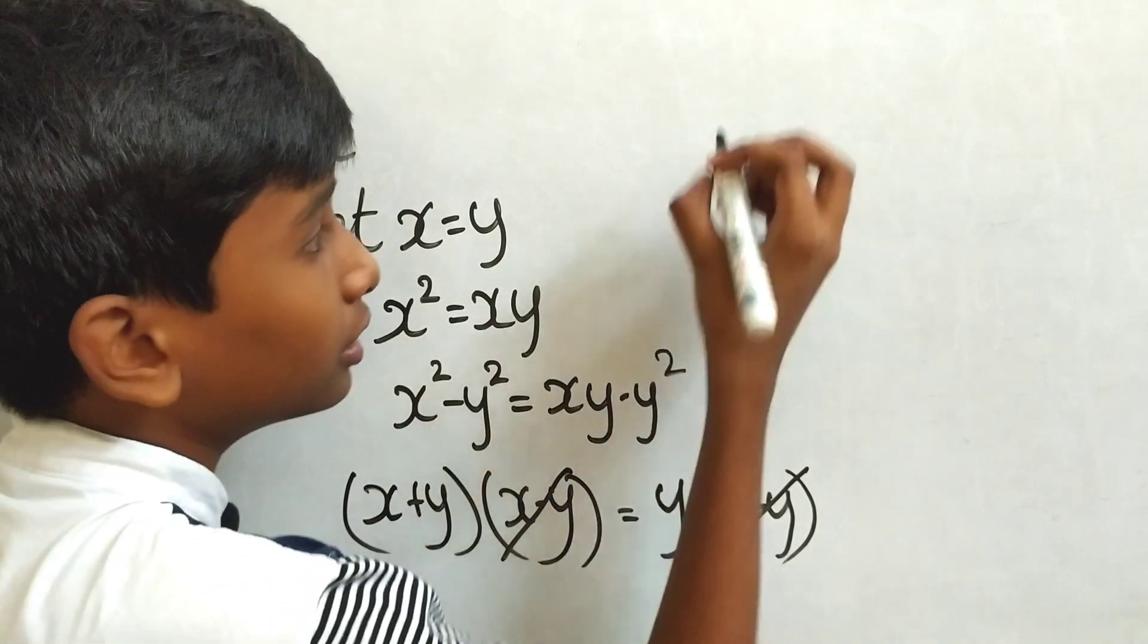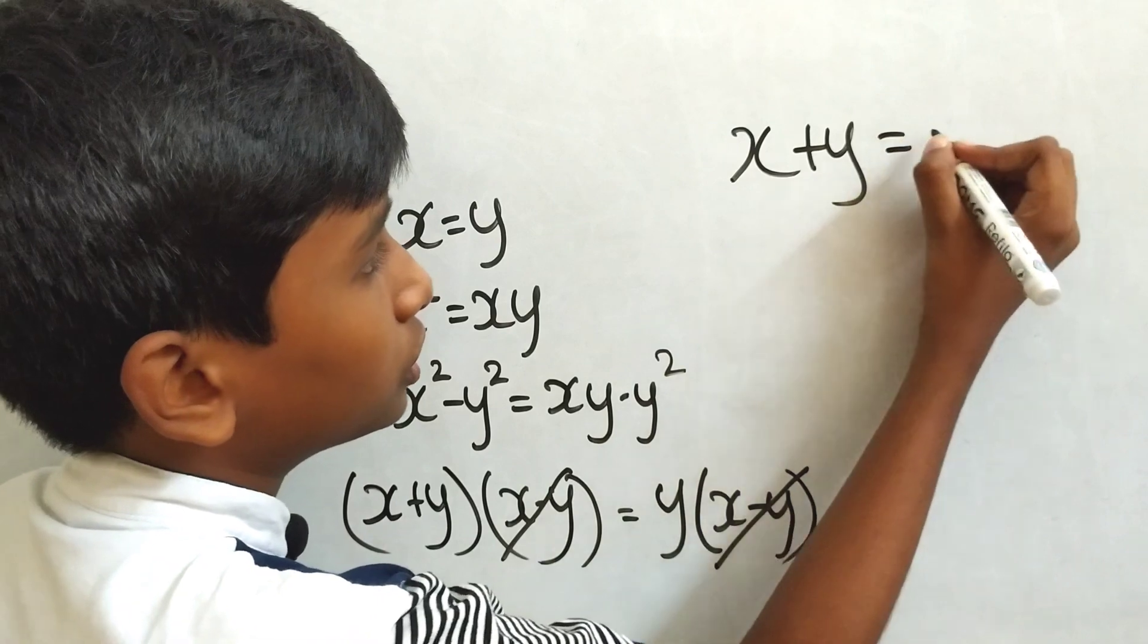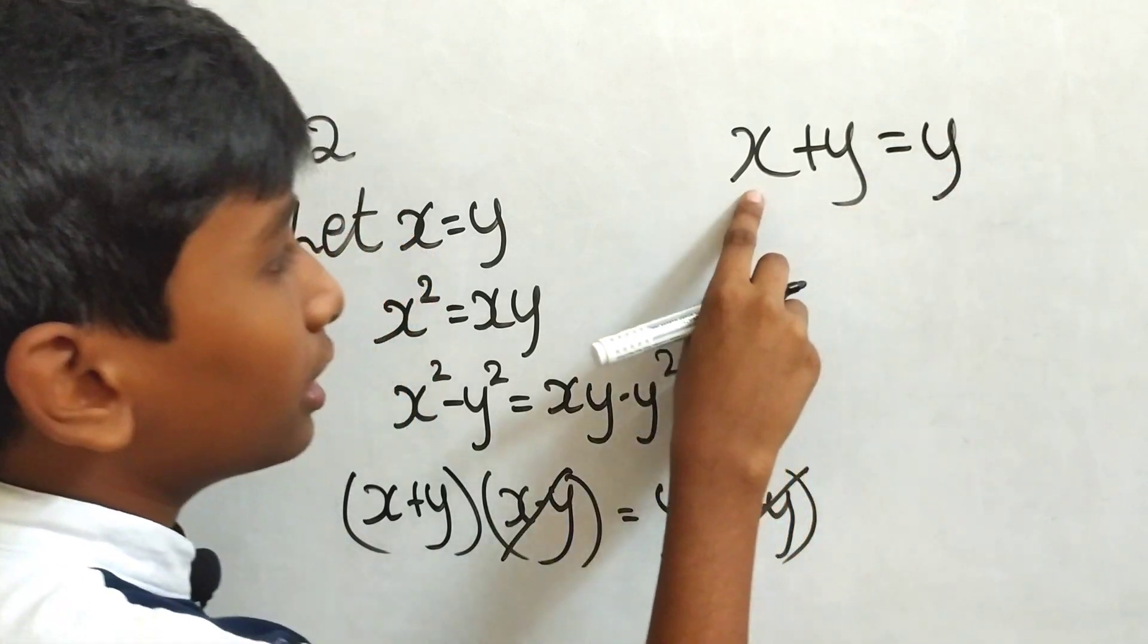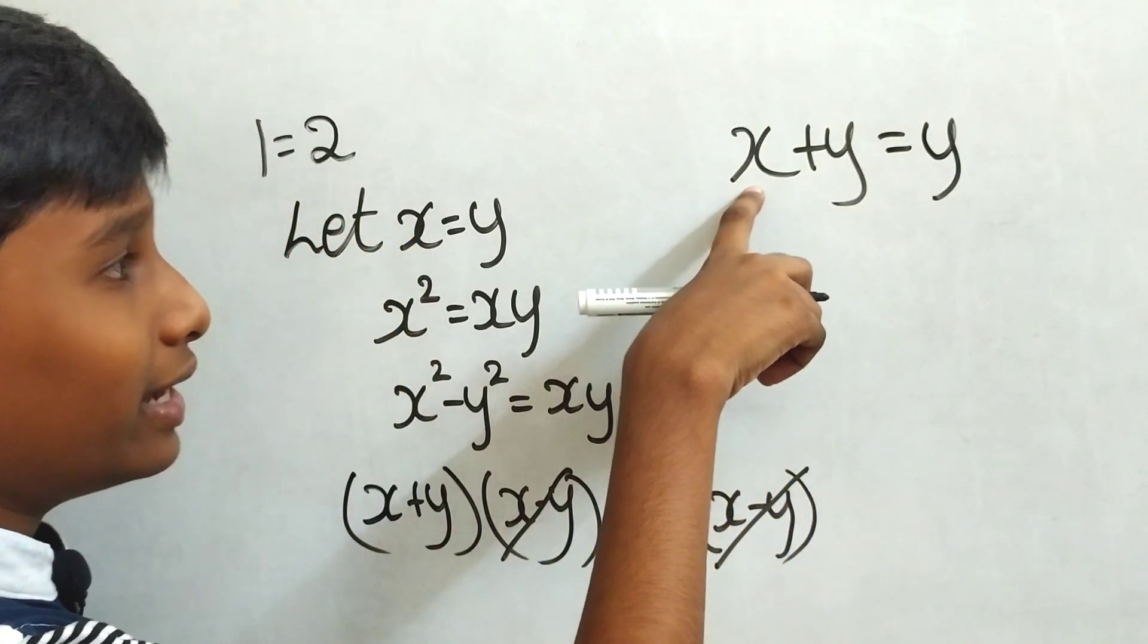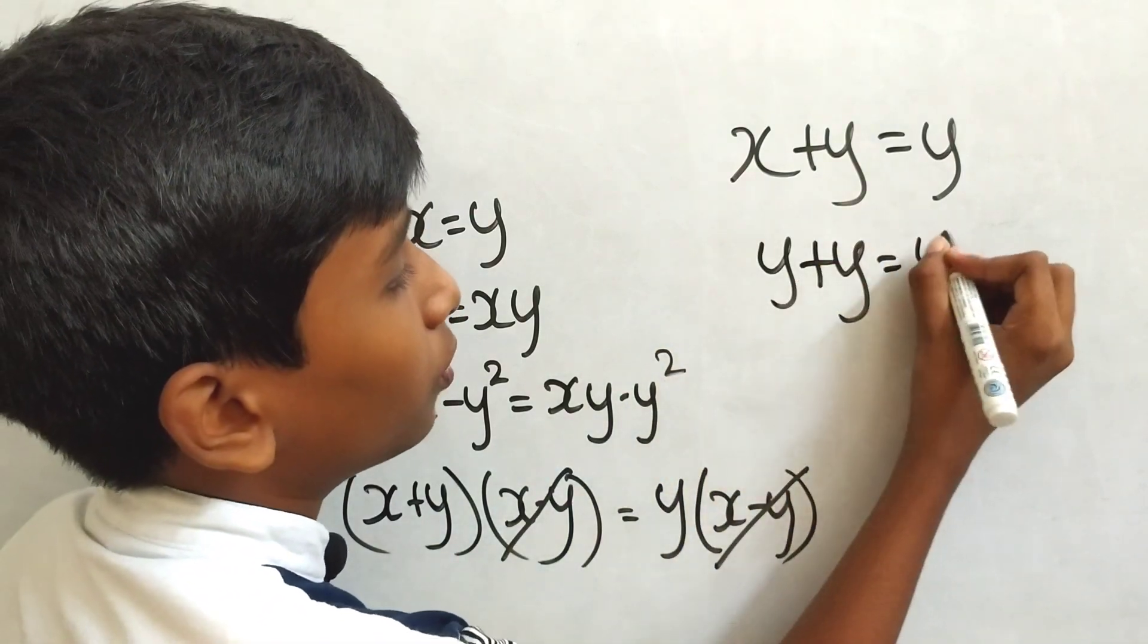Here x plus y. So the next step is x plus y equals y. Here substitute the value y for x. Then y plus y equals y.